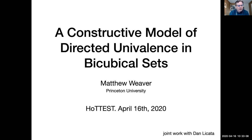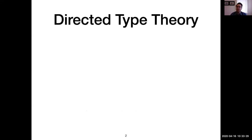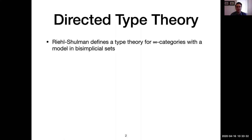This week, for our final speaker of the semester, we have Matthew Weaver from Princeton. His title is 'A Constructive Model of Directed Univalence in Bicubical Sets.' Thank you for inviting me. This is joint work with Dan Licata. To get started: what is directed type theory? Emily Riehl and Mike Shulman have defined a type theory for infinity-categories, where you have infinite dimensions of homotopical structure along with one dimension of categorical structure.